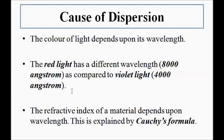An angstrom is of the order of 10 to the power minus 8 or 10 to the power minus 10 meters. So red light has a wavelength of around 8000 angstrom and violet light has a wavelength of around 4000 angstrom. This wavelength affects the refractive index of a material — the refractive index varies in accordance with the wavelength, which is explained by Cauchy's formula.